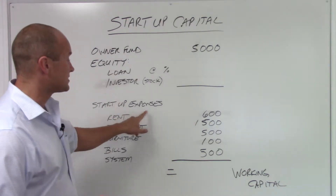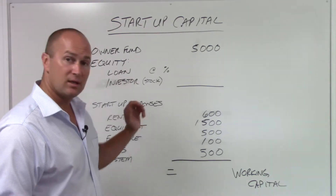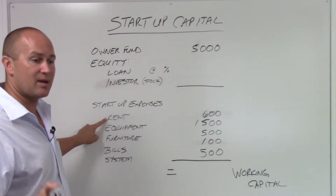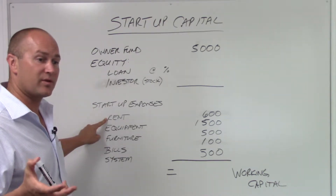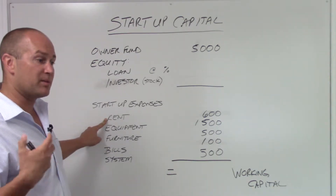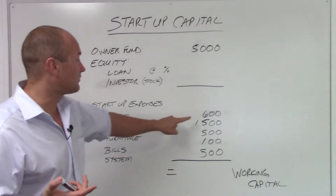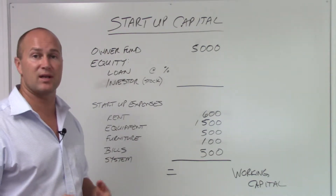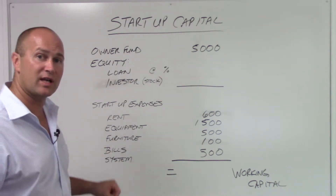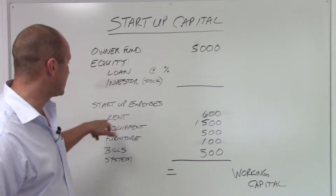Looking at startup expenses: rent is going to be $600 a month. Something you can do is negotiate with whoever you're renting from — say, 'I'm a startup business, can I get the first three months free and then start paying after that?' Give them time to understand you're a startup. Maybe the first month is $200, the next is $400, then $600. Don't be scared to negotiate rent when you're first starting out, especially with no patients yet.